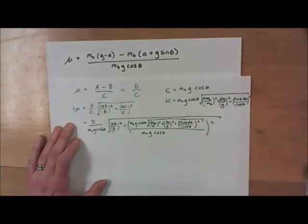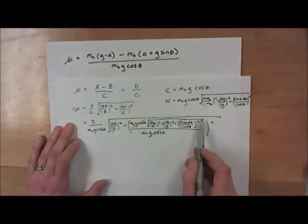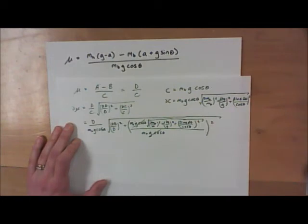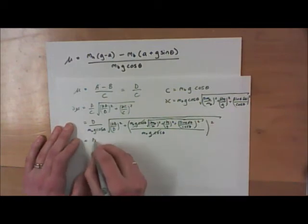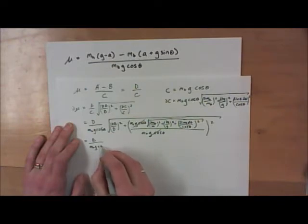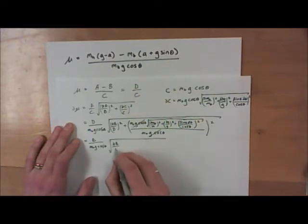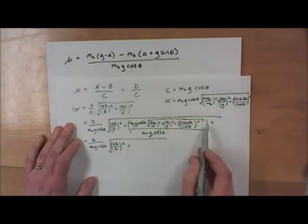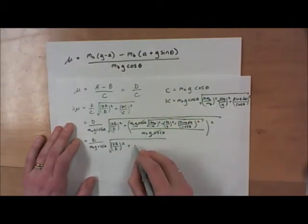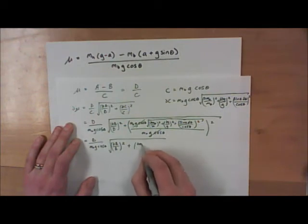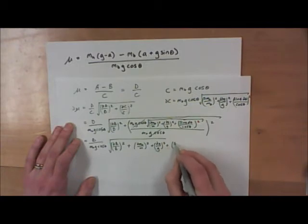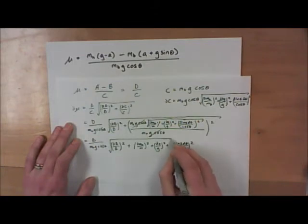Now we can actually simplify things a little bit, because the M_B G cosine theta cancels out with the denominator, and we'll have the square of a square root. So rewriting this more neatly: I end up with D over M_B G cosine theta, square root of delta D over D squared, plus the fractional uncertainty of M_B squared, plus the fractional uncertainty of G squared, plus sine theta times delta theta divided by cosine theta squared. So that part is done.